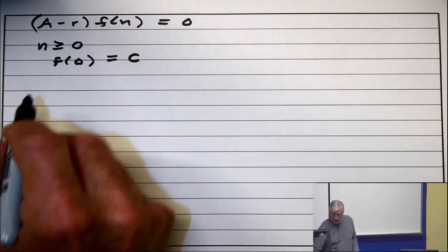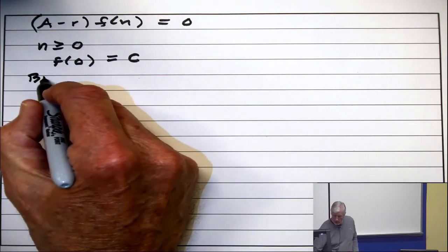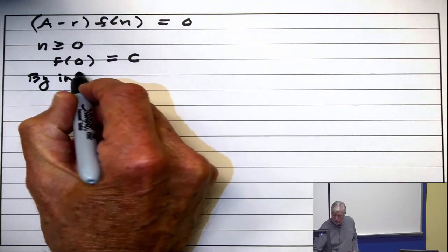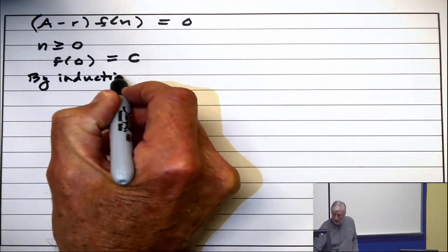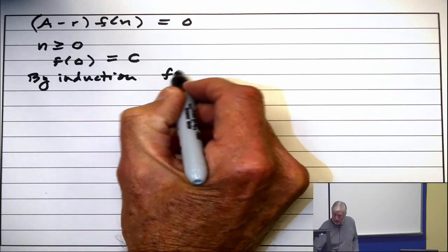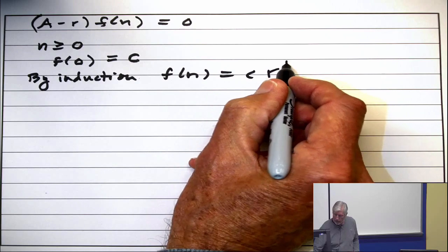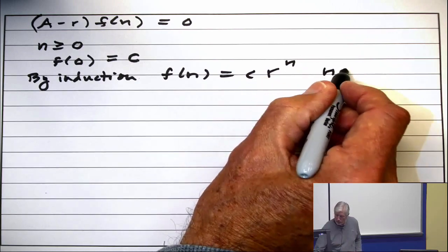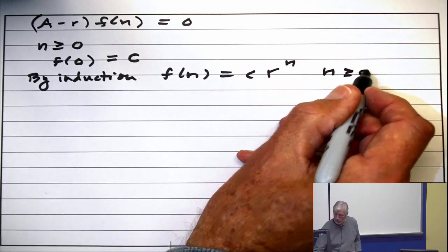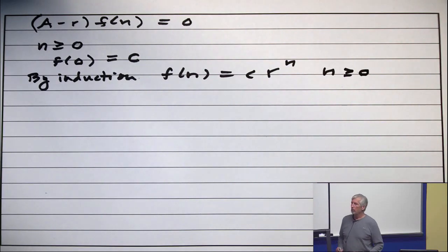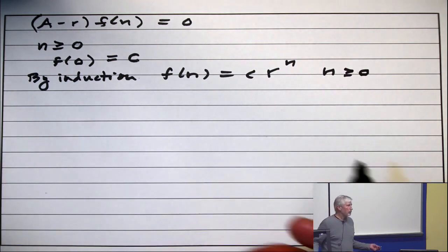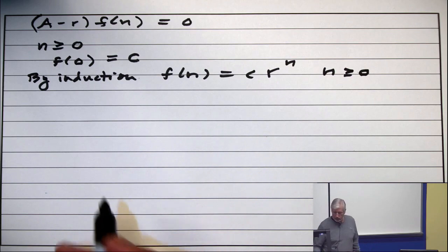Now we're going to prove by induction the following statement: f(n) = c·r^n for all n ≥ 0. How do you do a proof by induction? Go back to week two.